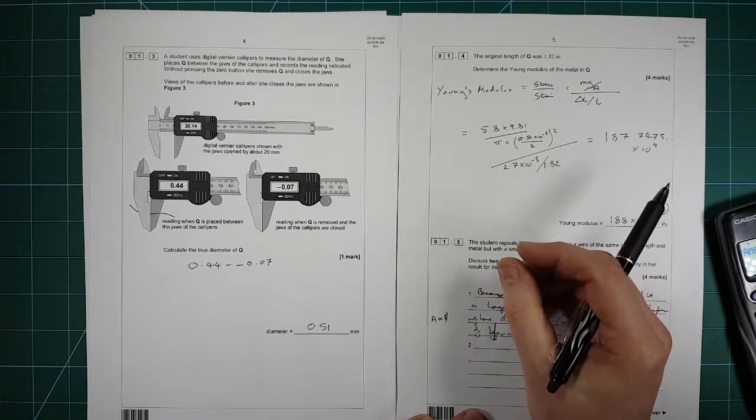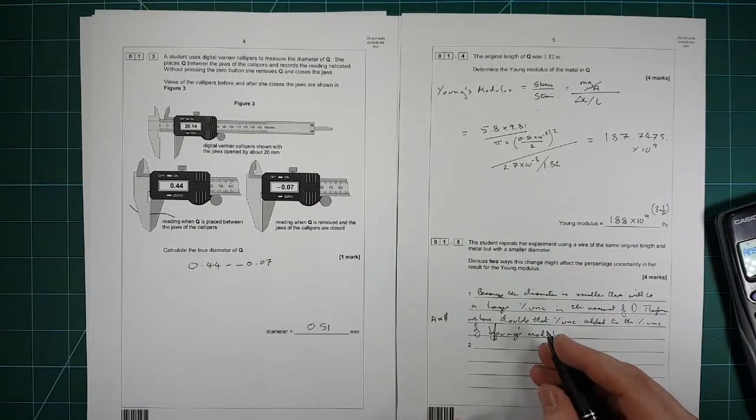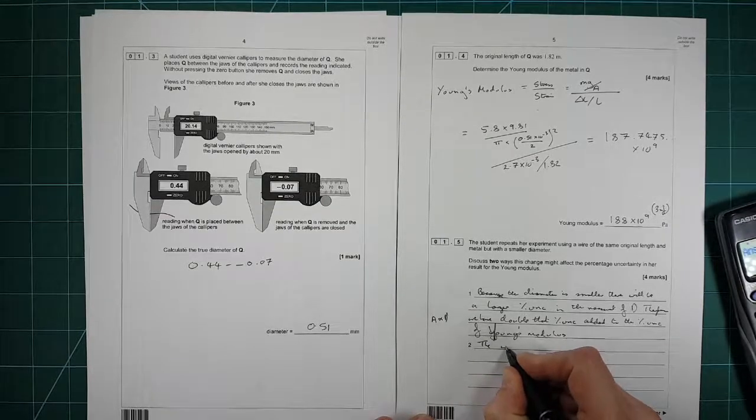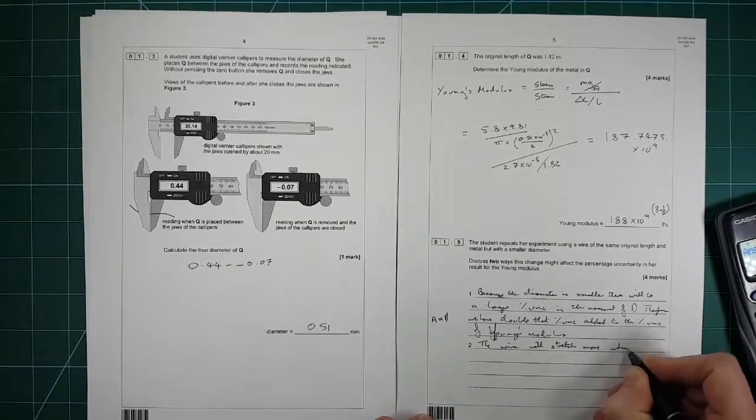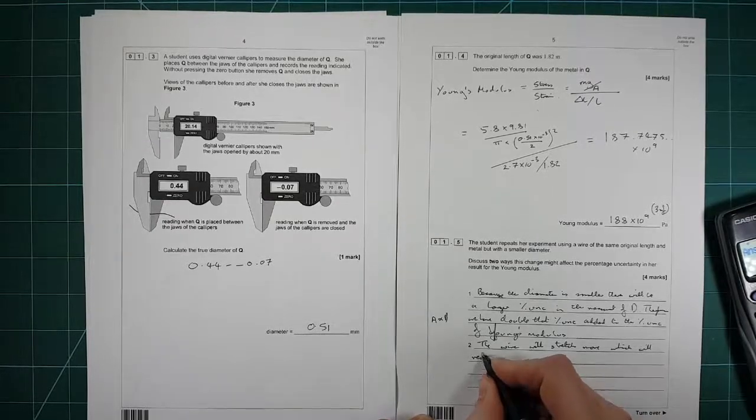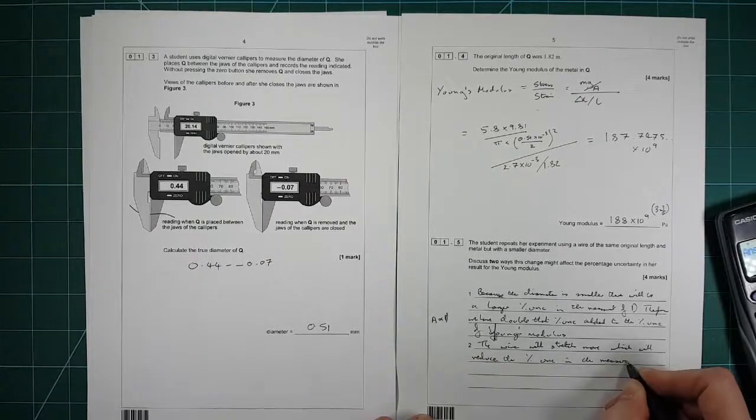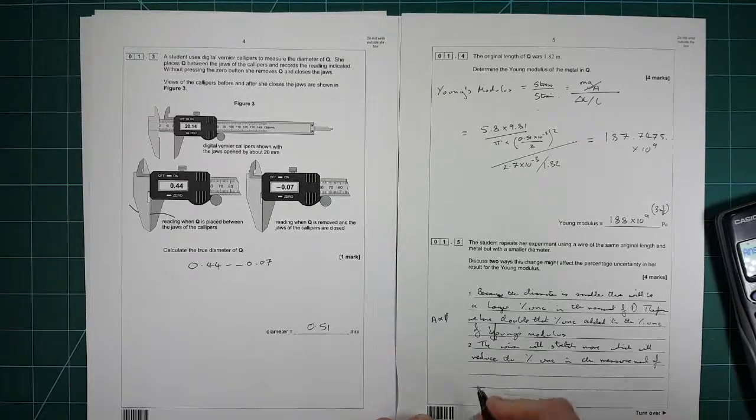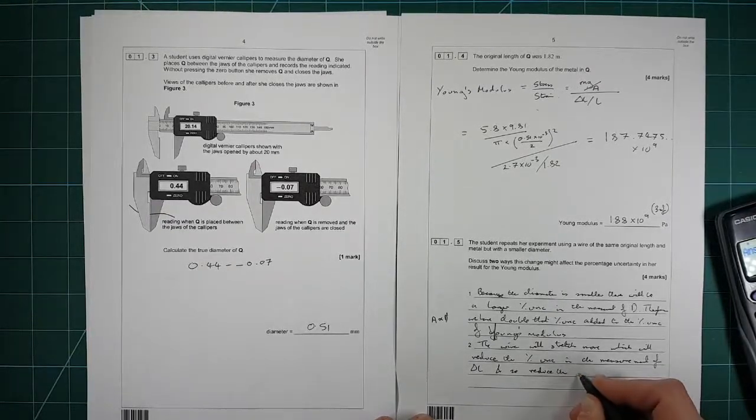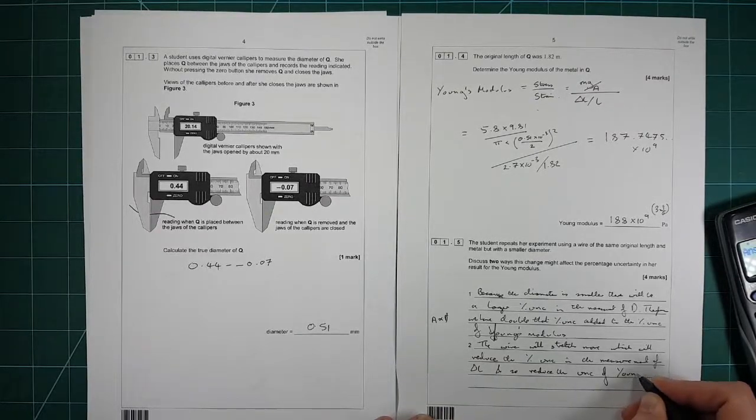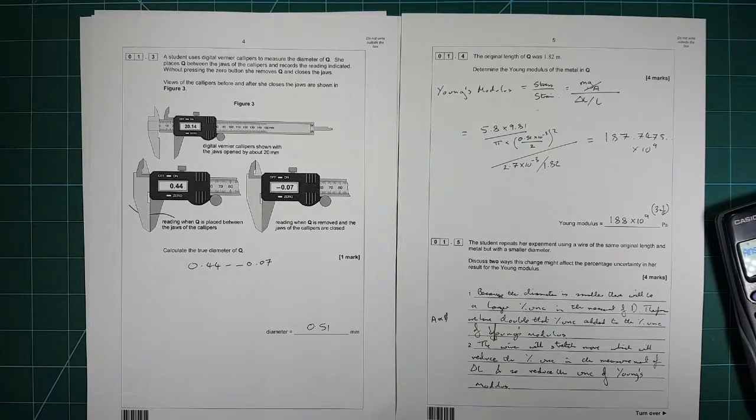The second thing is it will affect this. If you make the wire thinner, then for the same weight, it will stretch more. That will reduce the percentage uncertainty in the measurement of delta L. So the wire will stretch more, which will reduce the percentage uncertainty in the measurement of delta L, and so reduce the uncertainty of Young's modulus. So that's question one.